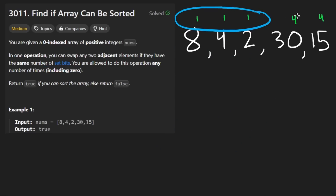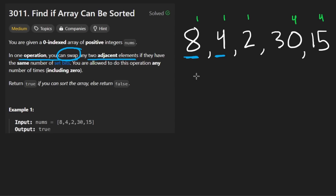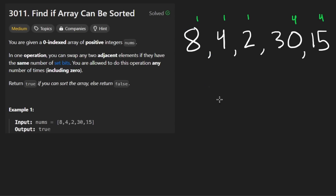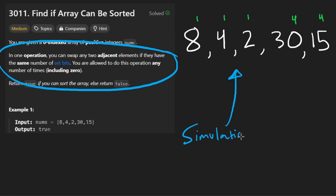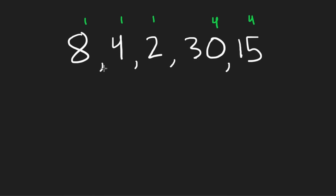They mention that the main operation we can do is a swap, and we can only do it with two adjacent elements. For example, these two are adjacent so we can swap them, but there's one more condition: they have to have the same number of set bits. Only then are we allowed to swap. So we want to know if we can sort this or not by these rules.